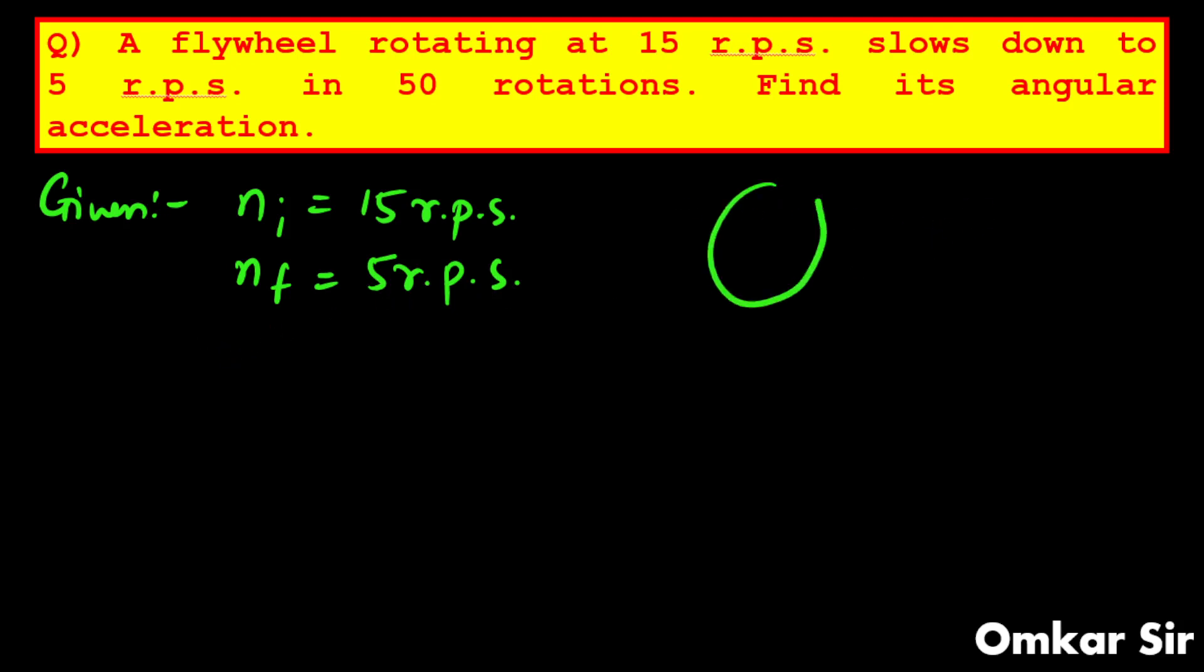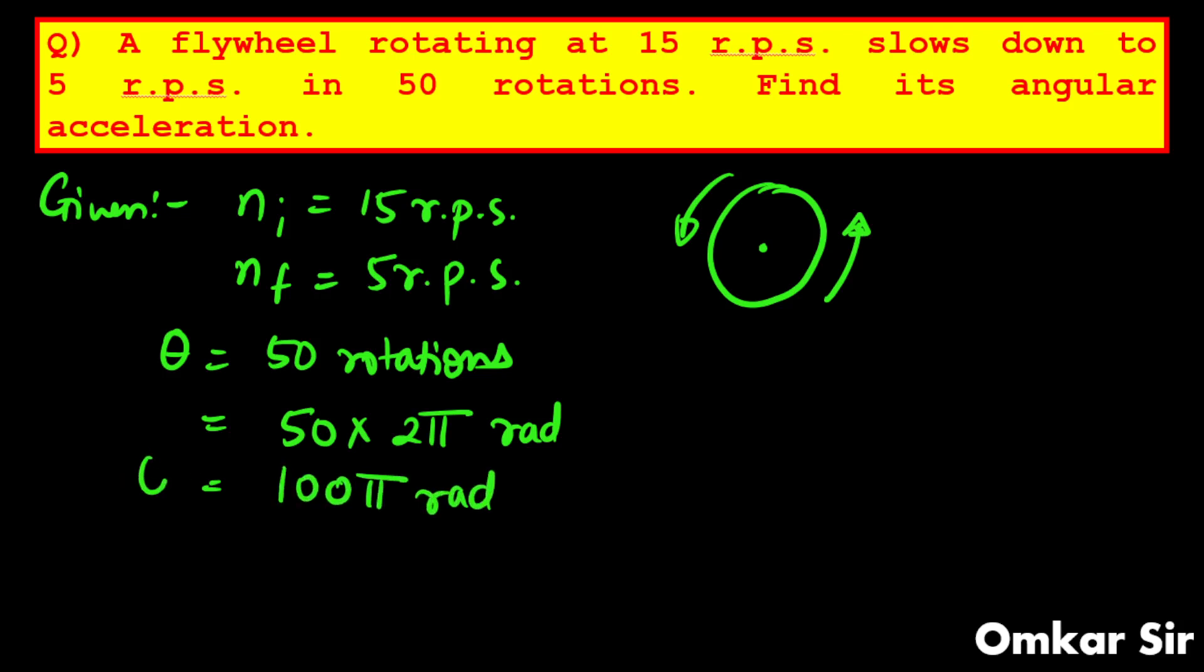If I am having a flywheel and that flywheel is rotating around its axis, we have to complete 50 rotations. In terms of angle theta, that is angular displacement. One complete circle is one rotation. So 50 rotations, if I'm writing in angles, one rotation is 2π, that is 360 degrees. So 50 times 2π, so theta will be 100π radian. We will use this theta value.